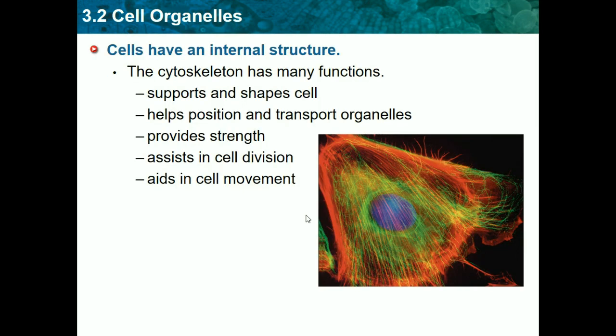The cytoskeleton basically fills up the whole cell except where the other organelles are, so it gives it its shape and supports it. It's inside the cytoplasm, which is basically like a jelly-like plasma substance that fills everything up, and the cytoskeleton within it helps it be sturdy, withstand things, and keep its shape.